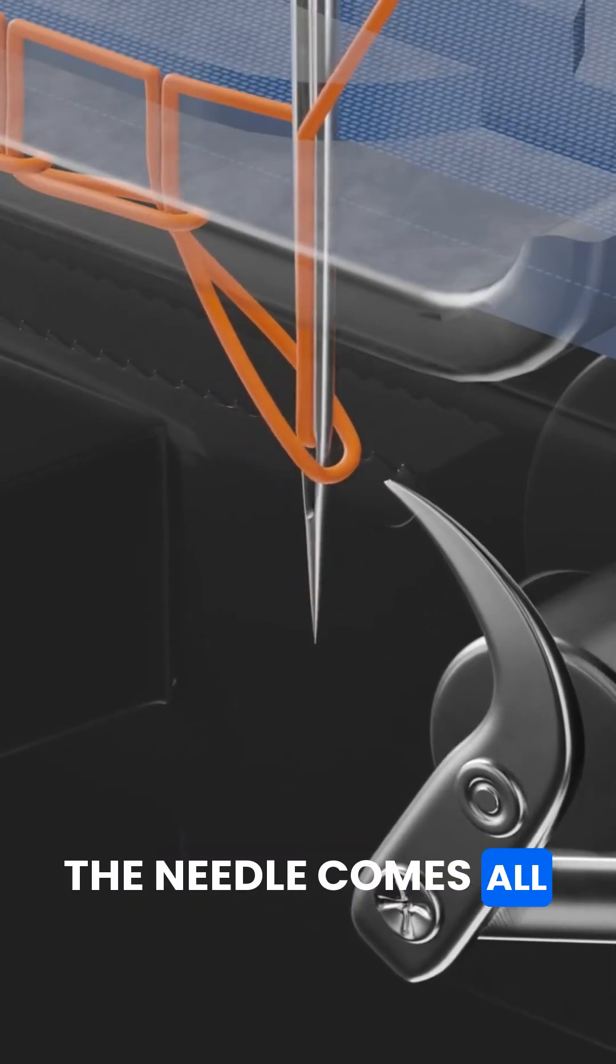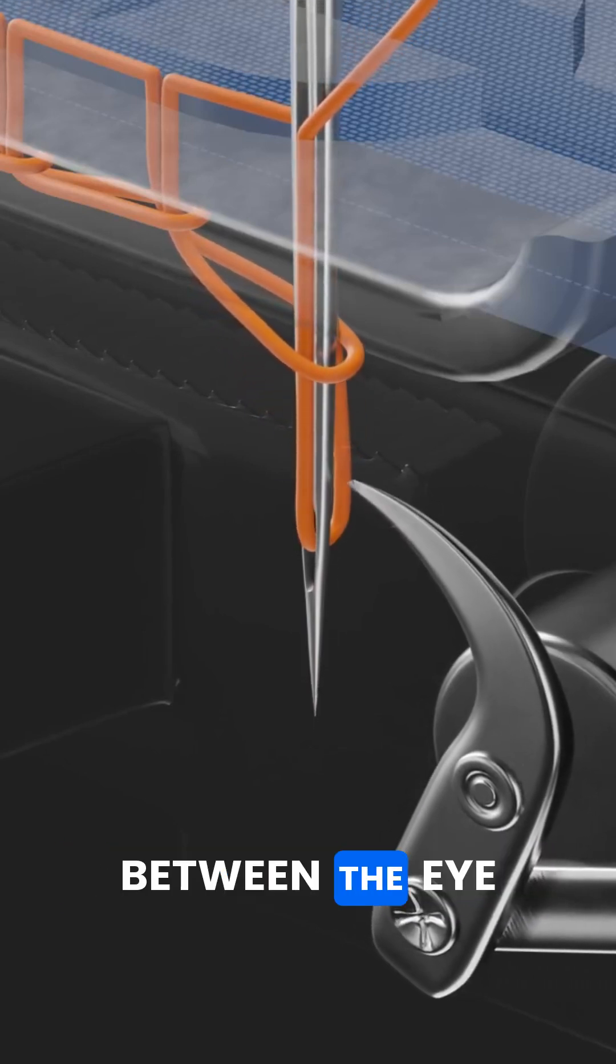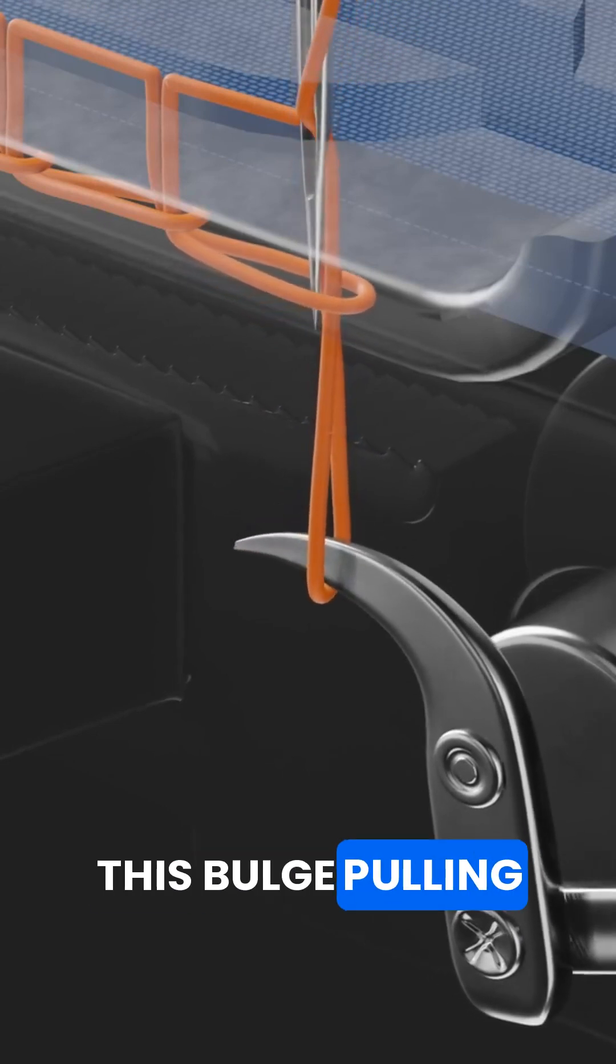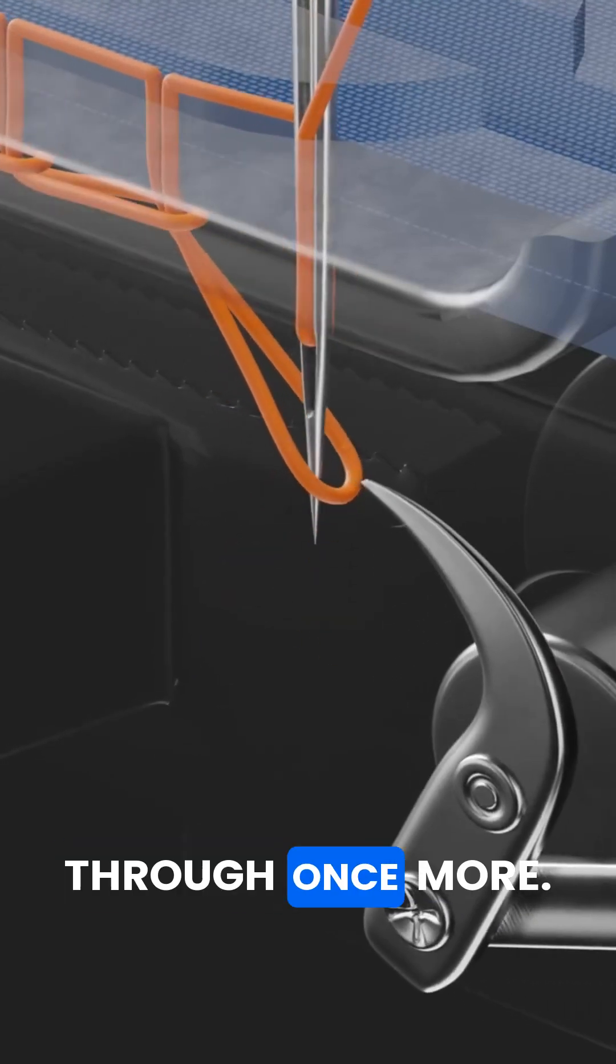The needle comes all the way down, and then as it moves back up, the thread between the eye and the fabric buckles again. The hook catches this bulge, pulling the thread into a loop for the needle to pass through once more.